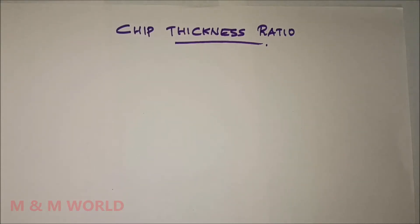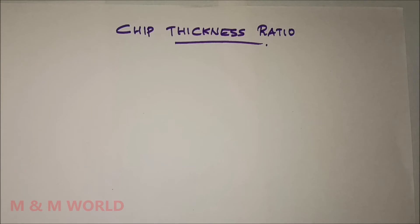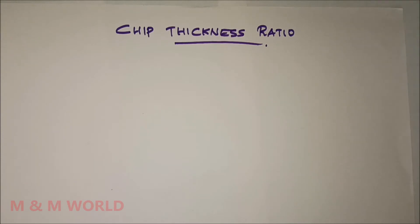Hello everyone. In this video we will study about chip thickness ratio and shear angle. When the tool is pressed against the workpiece, a chip is produced due to the deformation of material ahead of the cutting edge. Shearing action takes place in the shear plane, and the shear plane separates the deformed and undeformed material. The plane along which the element shears is called the shear plane.